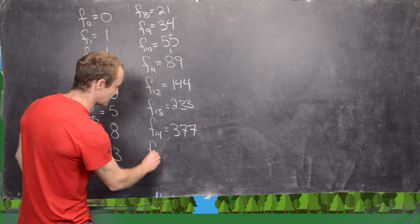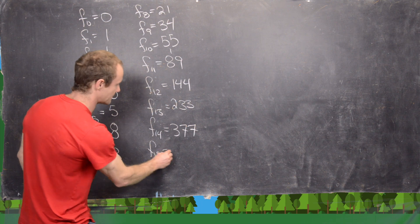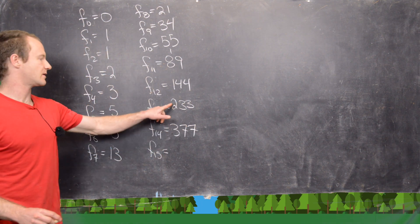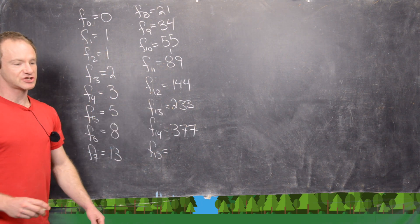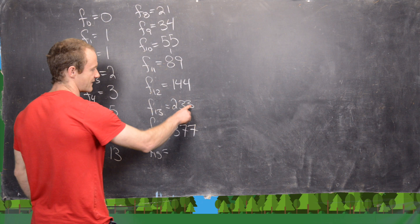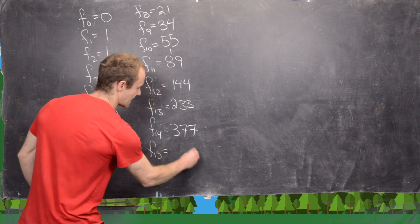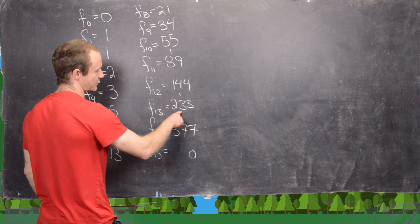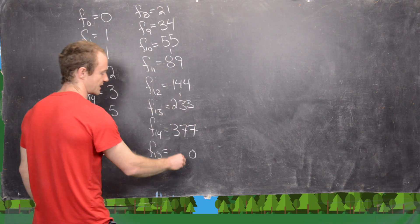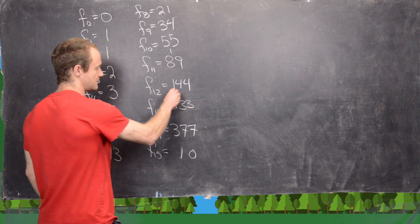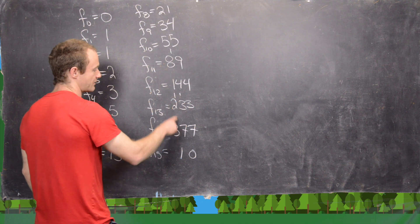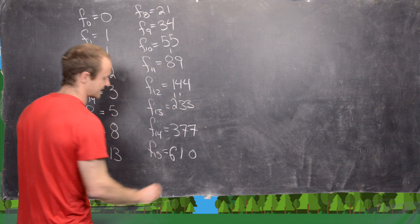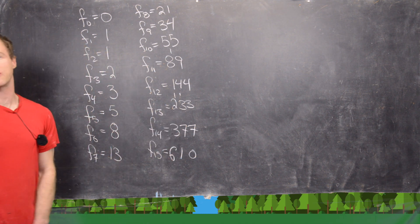The 15th Fibonacci number will be 377 plus 233. So let's see: 7 plus 3 is 10, so we'll carry the 1. 7 plus 3 plus 1 is 11, 3 plus 2 plus 1 is 6, so we have 610.